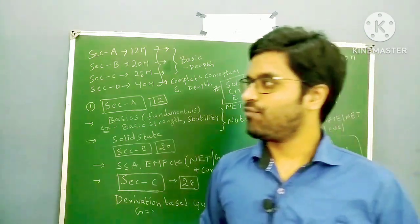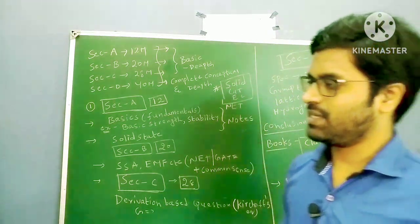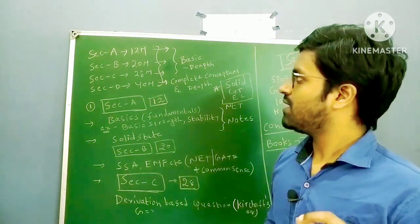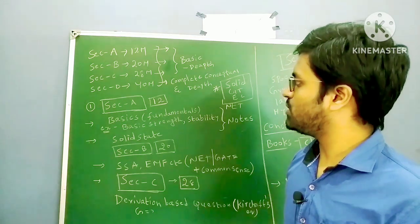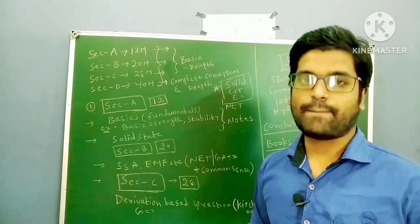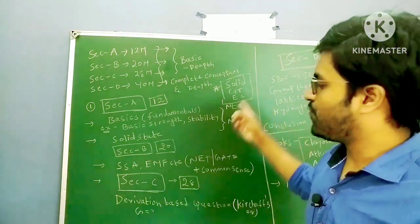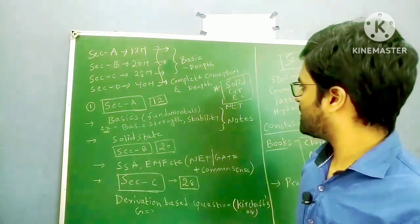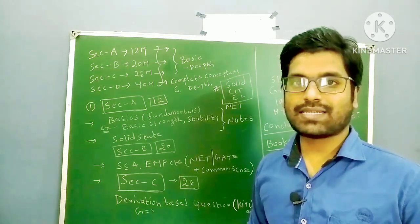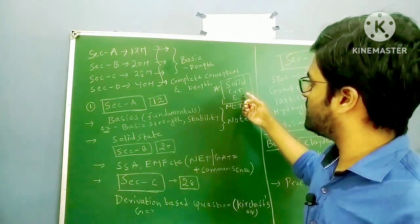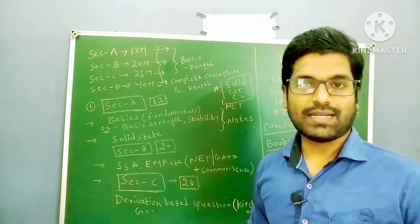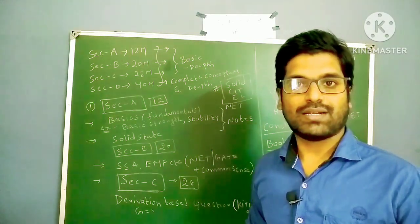If you observe the paper structure: Section A contains 12 marks, Section B is 20 marks, Section C is 28 marks, and Section D is 40 marks — giving 12 questions in total. Based on my analysis of previous year papers from 2015 and 2018, one question will definitely come on solid state, group theory, and electrochemistry. The examiner has been continuously asking questions on these three topics, so don't leave these chapters.